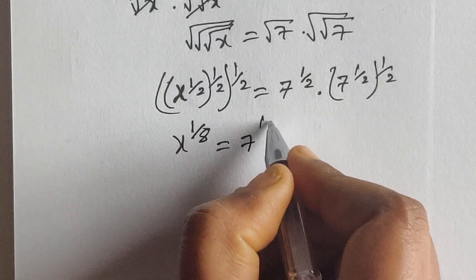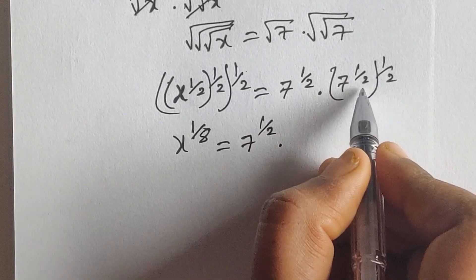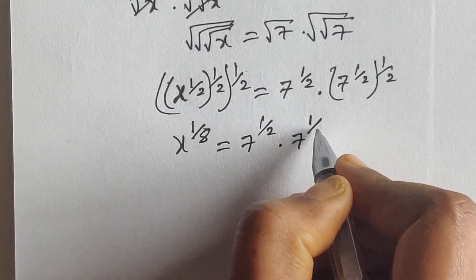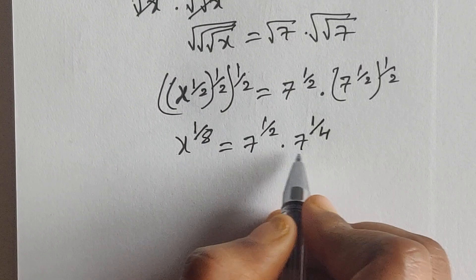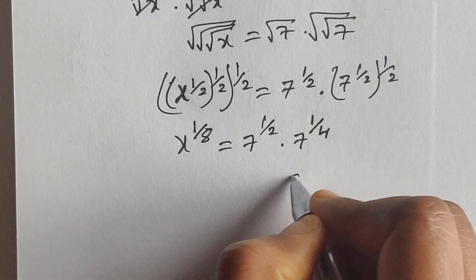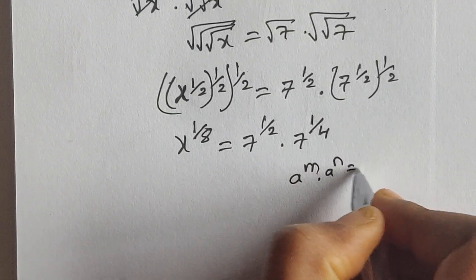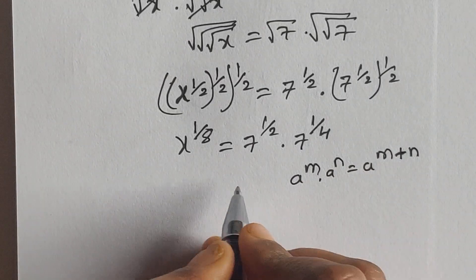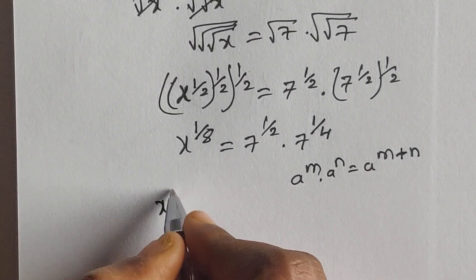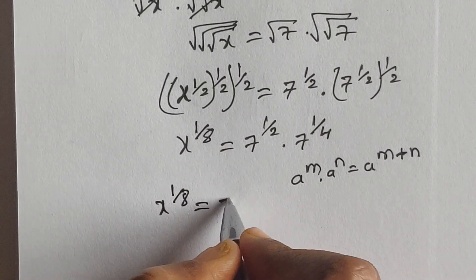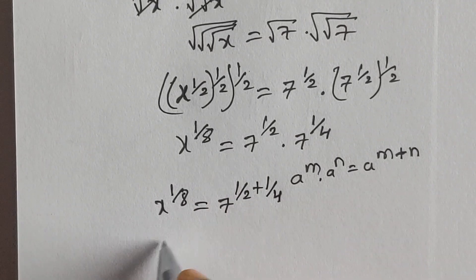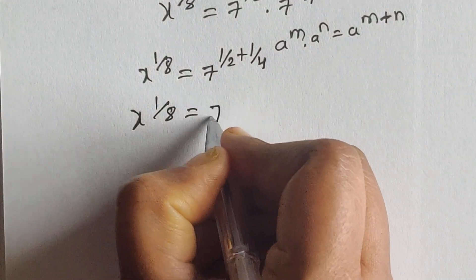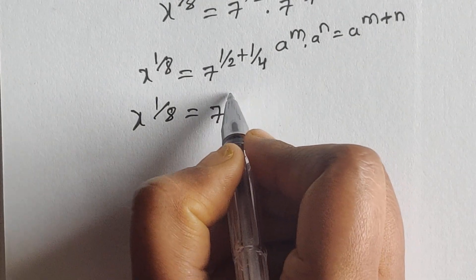Which equals 7 to the power of 1/2 times 1/2 times 1/2 times 2, giving 1/4. So now here we have the same base, and we can use the formula: a to the power of n times a to the power of n equals a to the power of n plus n. Using this formula, we can write x to the power of 1/8 equals 7 to the power of 1/2 plus 1/4, which is x to the power of 1/8 equals 7 to the power of 3/4.